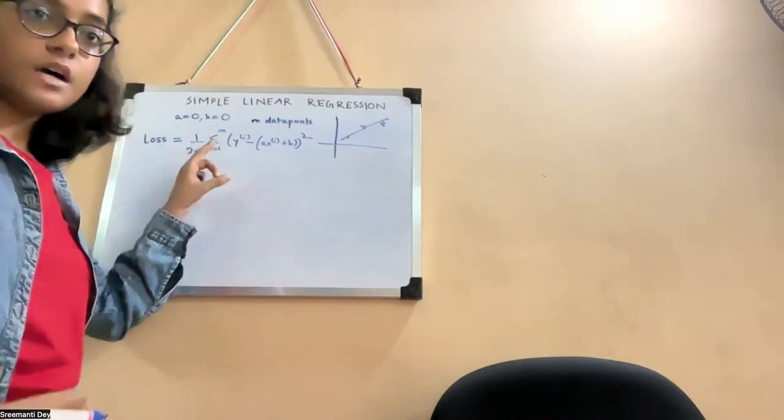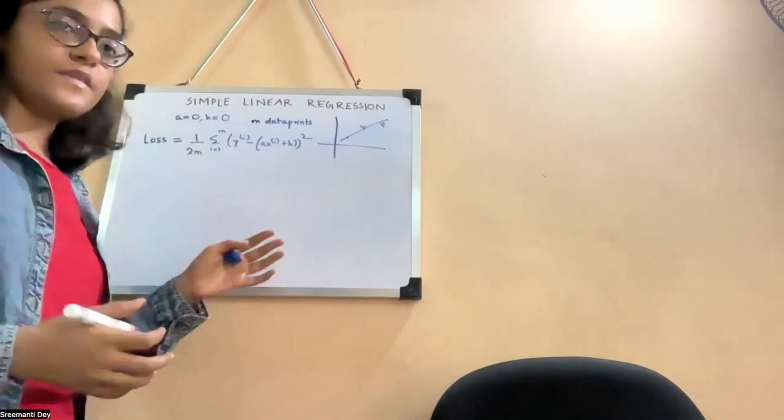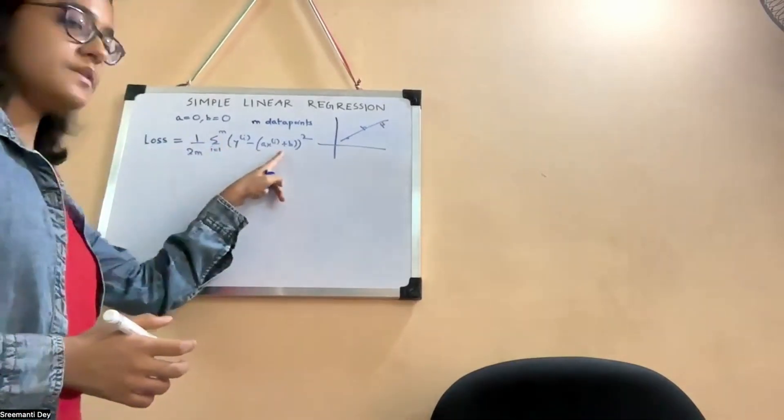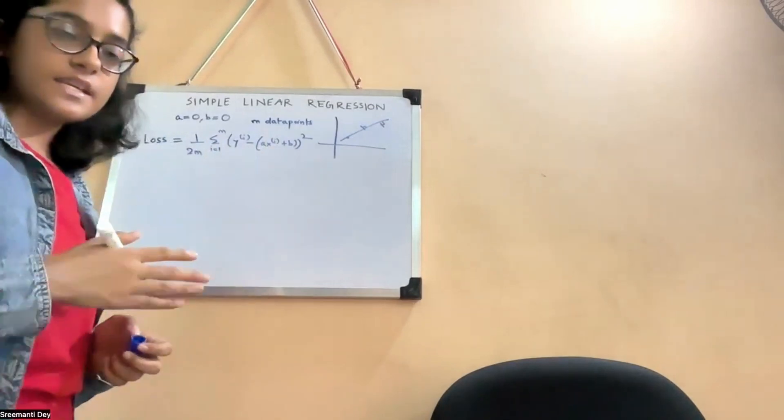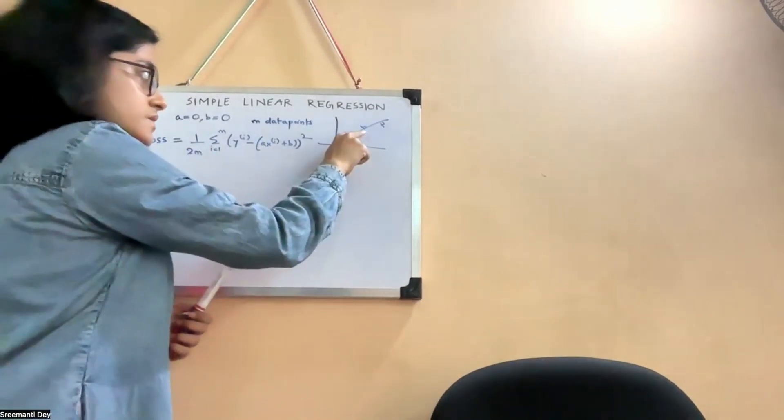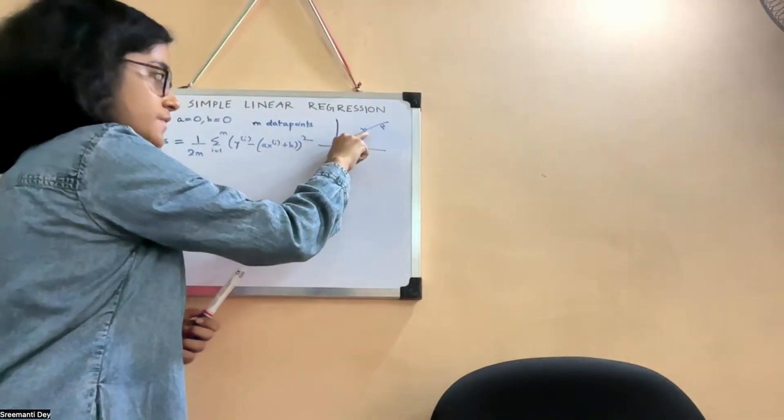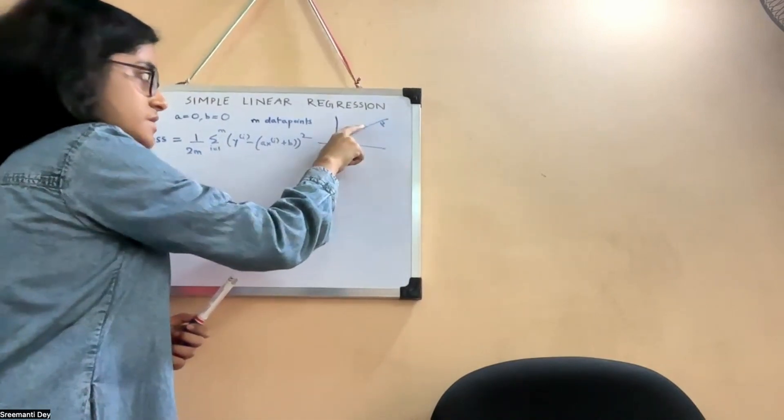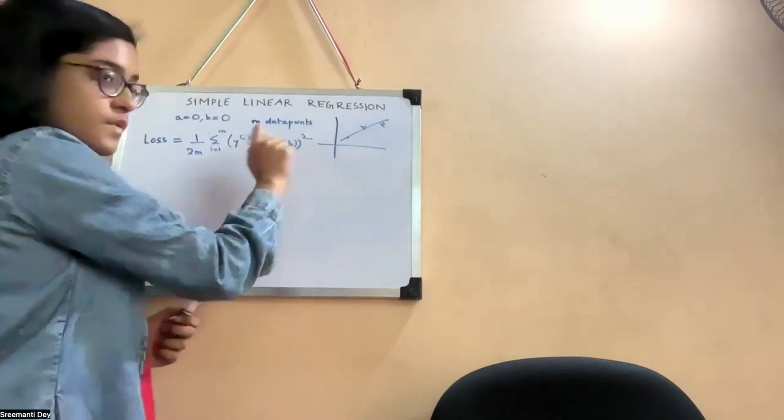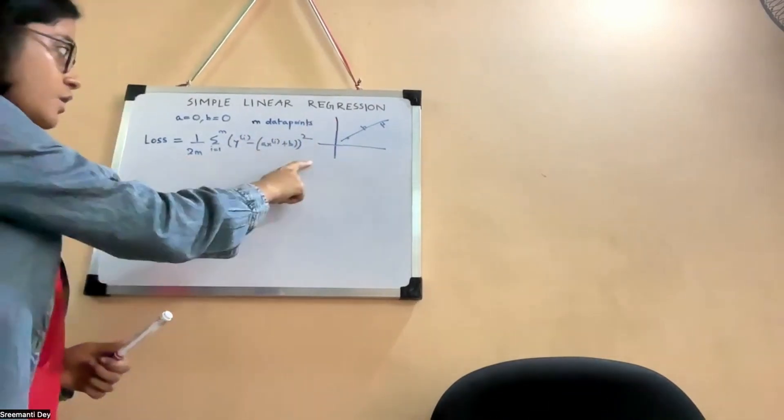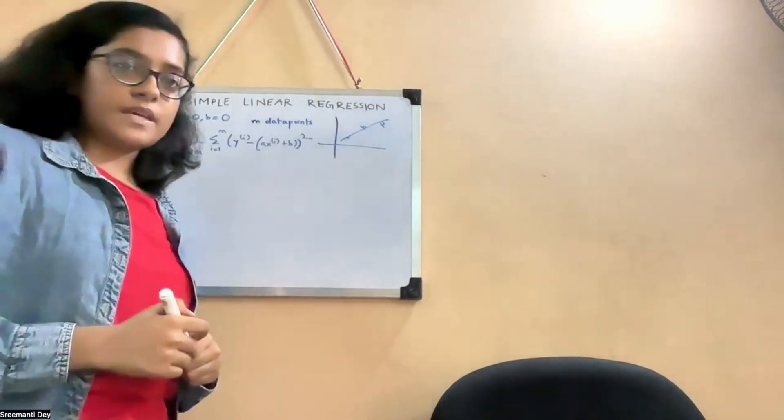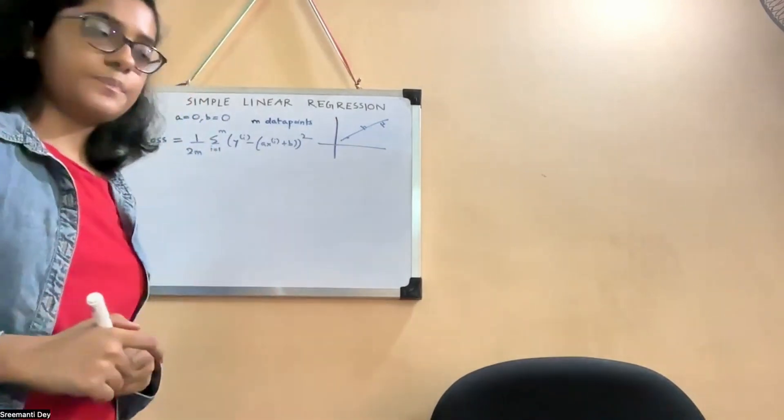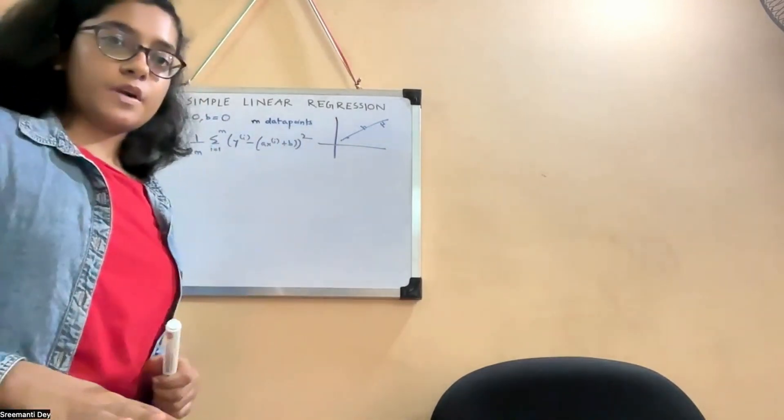So this is the function of the loss: 1 by 2m summation i equal 1 to m yi minus (axi plus b) squared. So this is the least squares loss function. This yi is the target value which we have in our dataset, and this is the predicted y value. Our equation - this would be the predicted one which we get by placing 2 in this equation, but the actual value is 11. This is the loss and we are squaring it out and then taking all the summation.